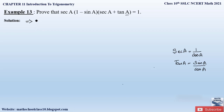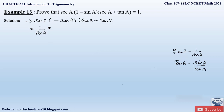Since we have to prove the left hand side equal to 1, let us write down the LHS first: sec A into (1 minus sin A) into (sec A plus tan A). Now let us convert sec A and tan A in terms of cos and sine. So sec A is written as 1 by cos A, into (1 minus sin A), into (1 by cos A plus sin A by cos A).